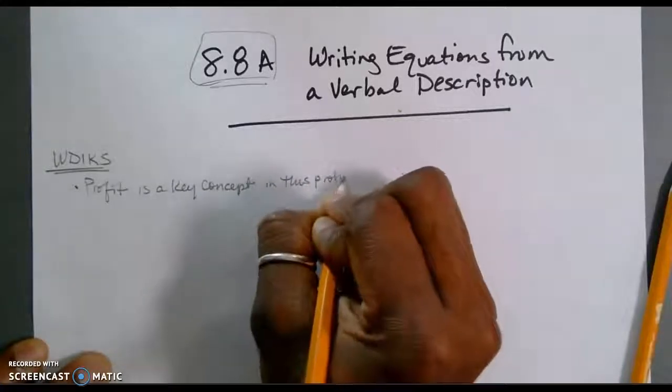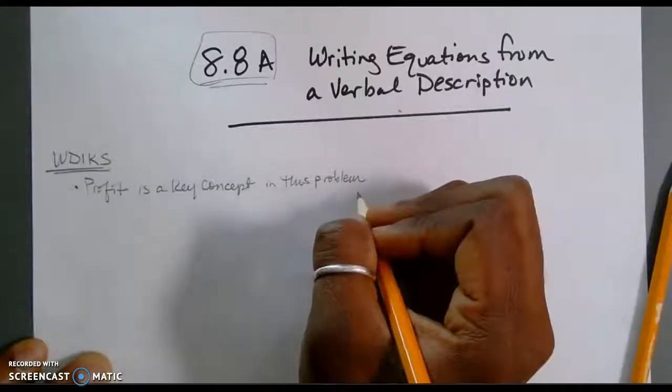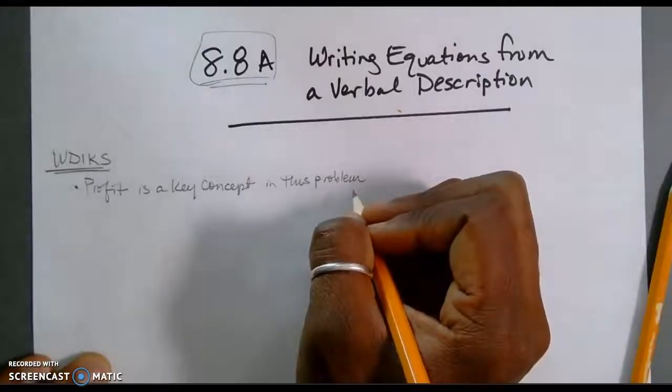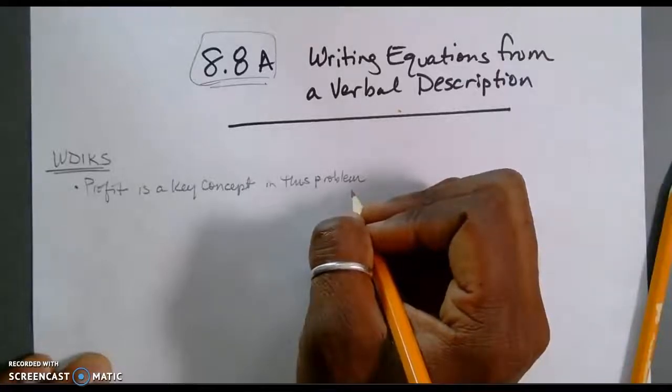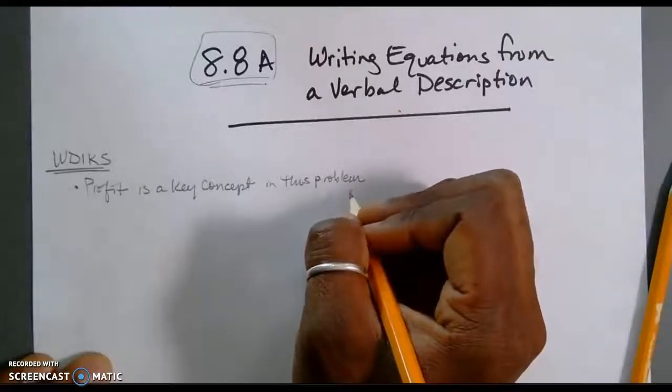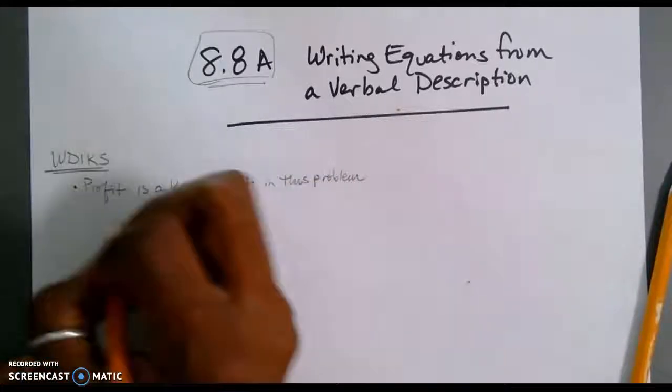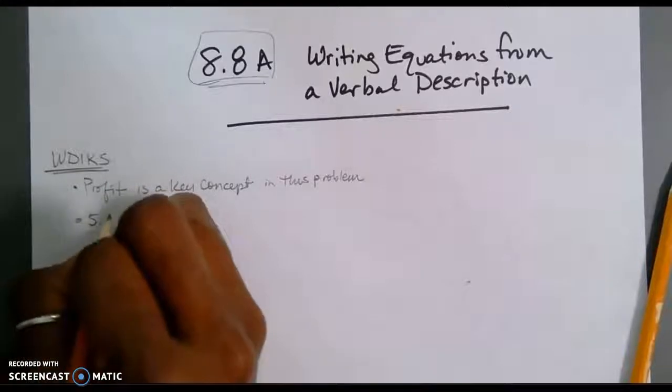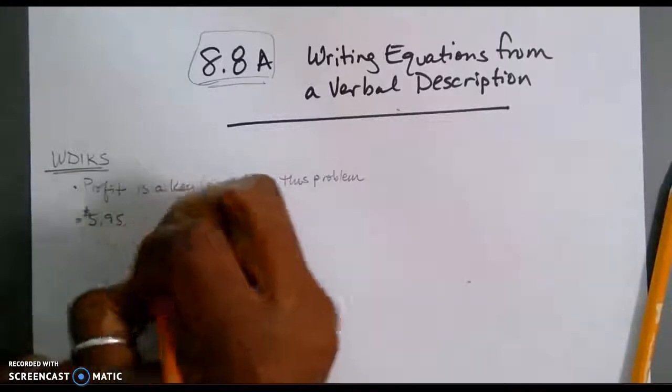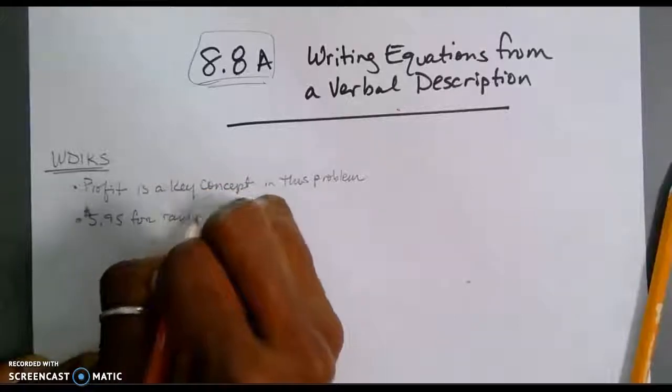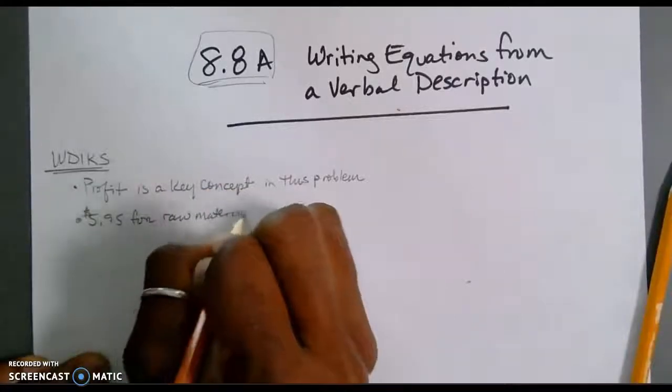Profit, as we know, is going to be represented by the amount that Mrs. Jimenez will earn from her sales and that amount exceeding the amount that she's paid for her raw materials and or, in this case, rentals of that embroidery machine. So, pulling from the problem, we know that $5.95, she pays for her raw materials. Those are the things that she uses to make her blankets.